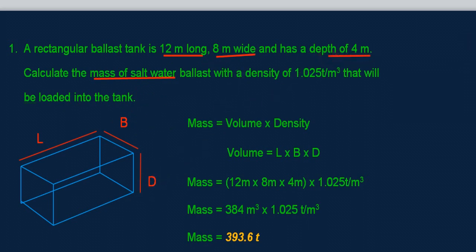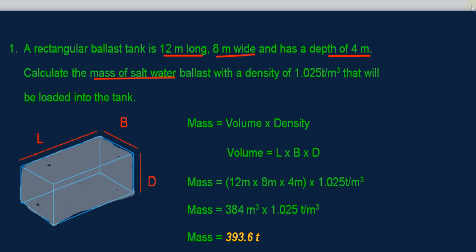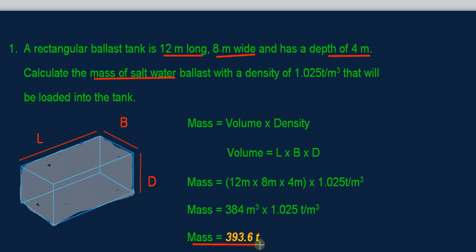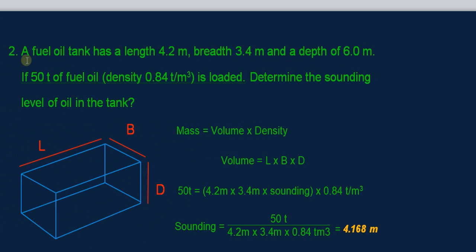We assume the ballast tank is now full of salt water, and we need to find the mass of the salt water inside the tank. The formula is mass equals volume times density, and volume equals length times breadth times depth. The volume of the salt water inside the tank is 384 cubic meters. Multiplying by the density of the salt water, the mass of the salt water inside the tank is 393.6 tons.